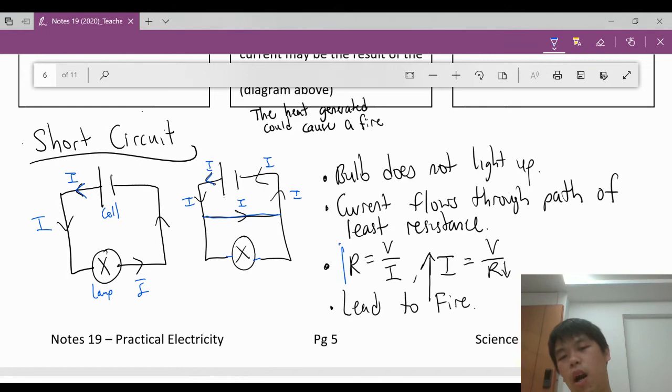And let's look at the equation. We know R equals to V over I. If we were to decrease the resistance, we know that this new path here has very low resistance. We decrease the resistance. What will happen to your current? With the fixed V, your current will go up. So there's a current surge. What will happen is your wires will get hot. It may lead to an electrical fire.